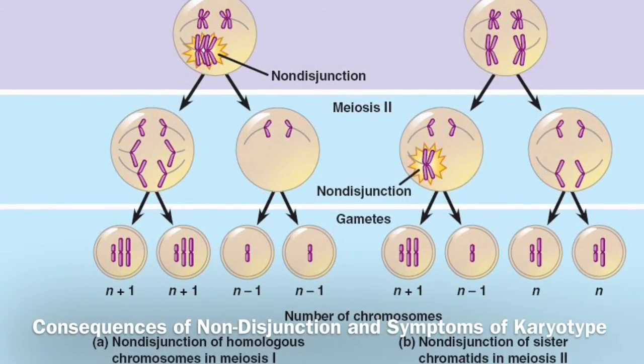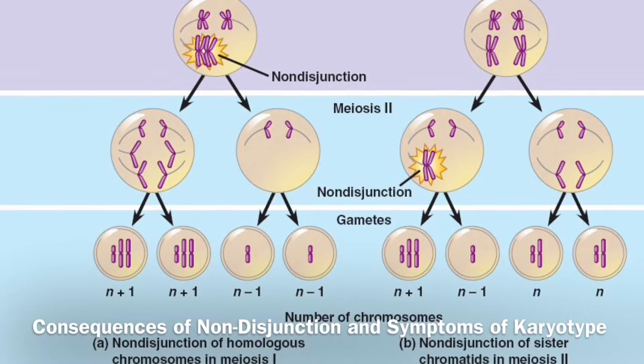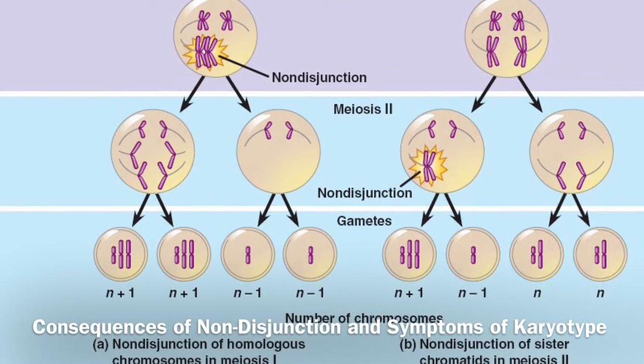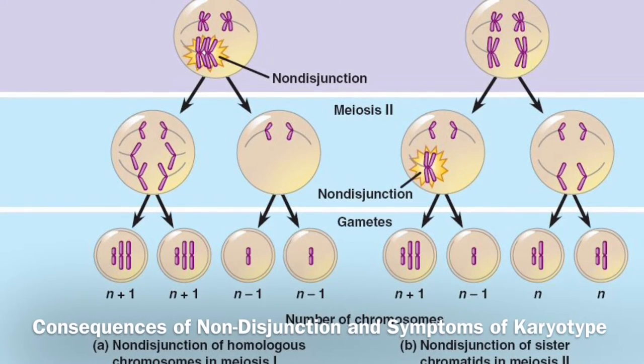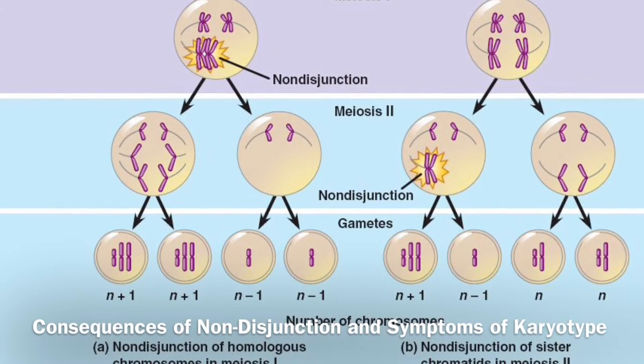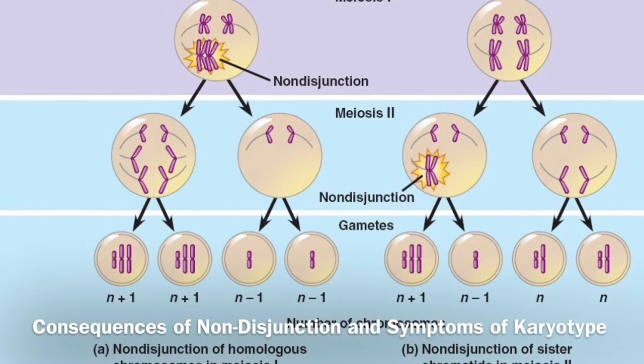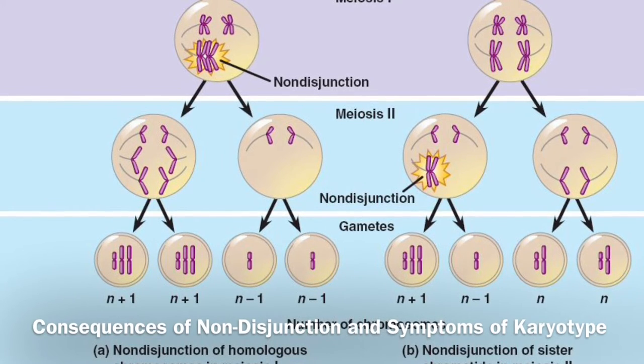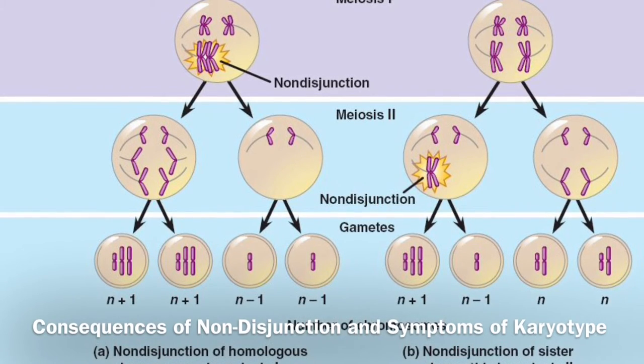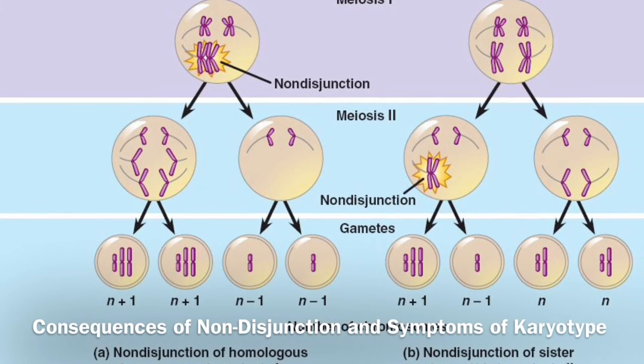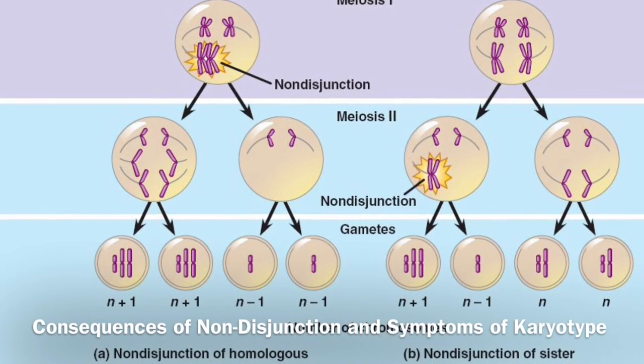Non-disjunction can result in a number of different conditions and consequences. These include Down syndrome, Klinefelter syndrome, Turner syndrome, super males, triple X syndrome, or Edwards syndrome, and in this case ours was Down syndrome or trisomy 21.